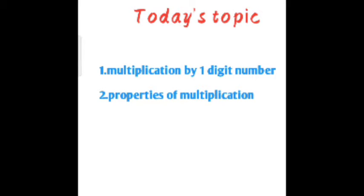Today we will learn some topics from Chapter 5. Our topic for today is multiplication by a one digit number. I will teach you how to do the multiplication of three and four digit numbers by a one digit number, and you will also learn some properties of multiplication. Let's start our today's lesson.